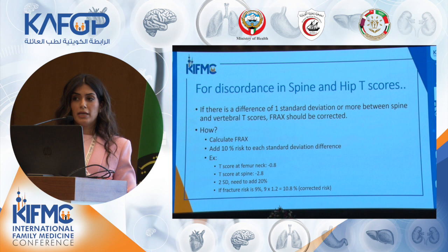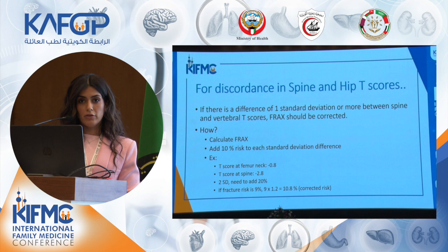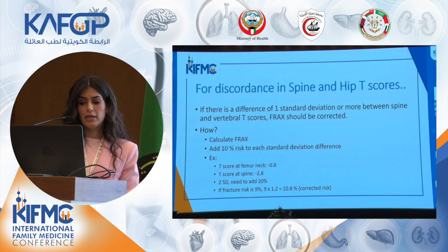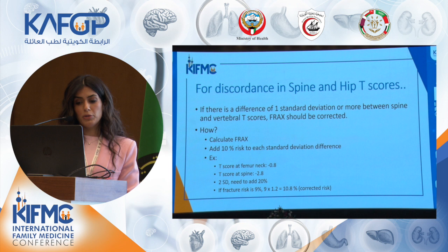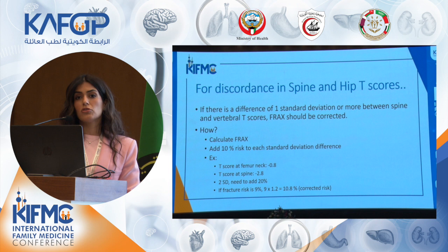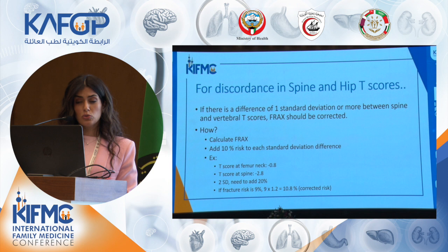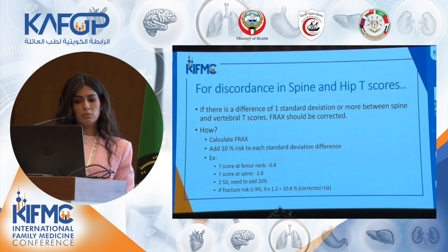There is another enhancer — lumbar spine discordance. Sometimes there will be a discordance between the T-score of the lumbar spine and the hip. For example, if the T-score at the femur neck is negative 0.8 and the score at the spine is negative 2.8, there is a two standard deviation difference. You add 10 percent risk for each standard deviation. So if the FRAX was 9 percent and there was a two standard deviation discordance, you multiply the FRAX by 1.2 — adding 20 percent of the FRAX to the risk.